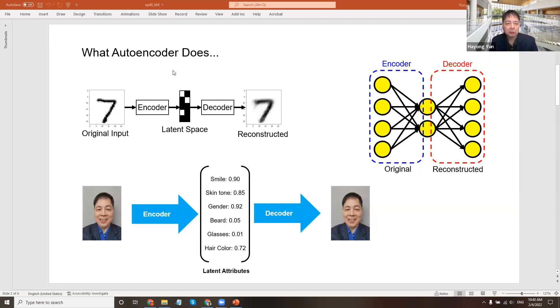First, with the autoencoder that we have used, it takes an original input and has an encoder, then goes through a latent space like a bottleneck here, and reconstructs the image through a decoder.